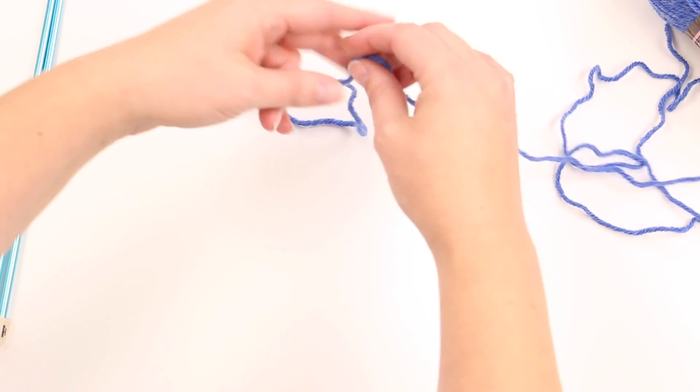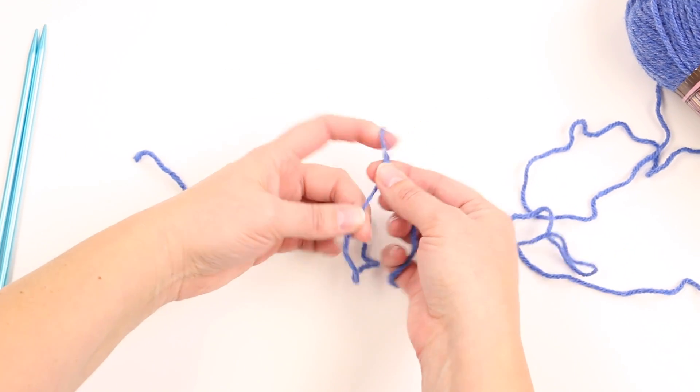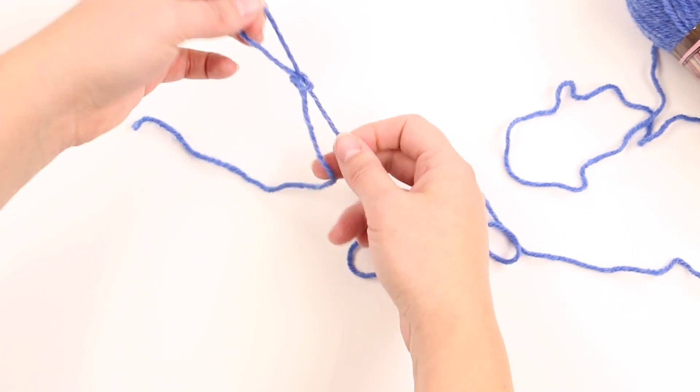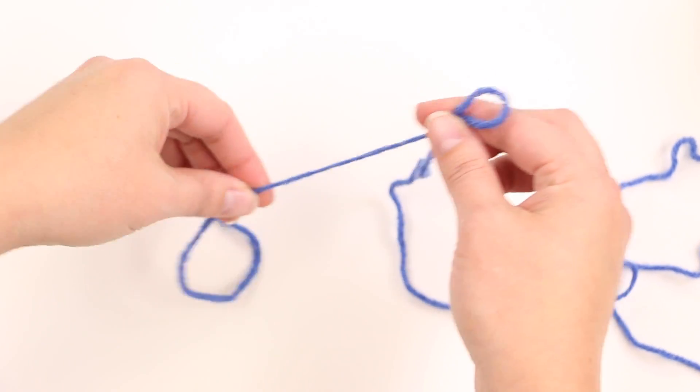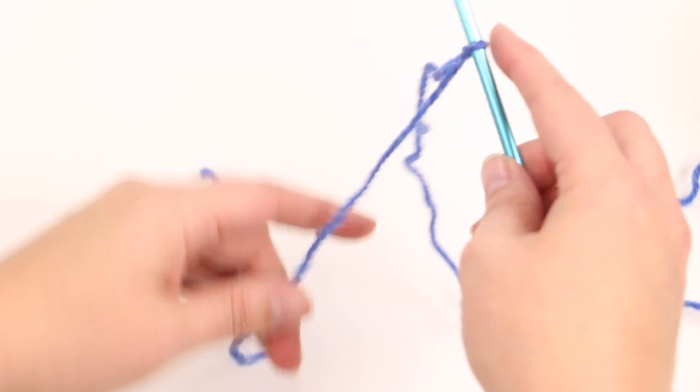So to do this, to get started, you just leave yourself a tail and you need to make a slipknot. So I'll just work a basic slipknot here. And to do this, you take one needle and put it on your slipknot.